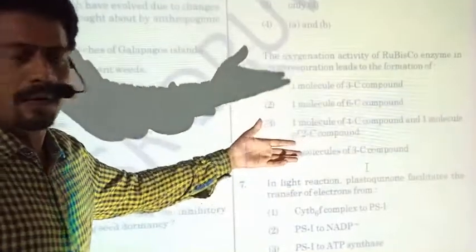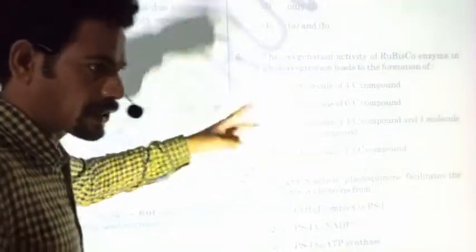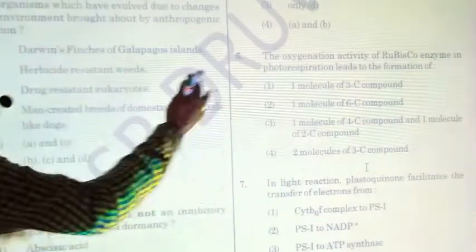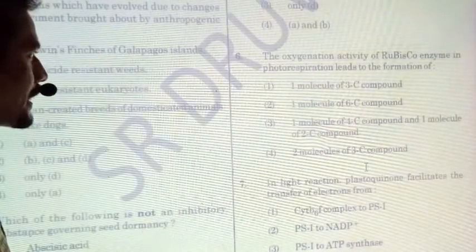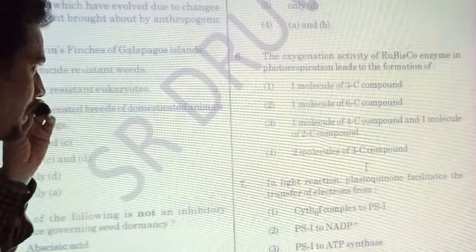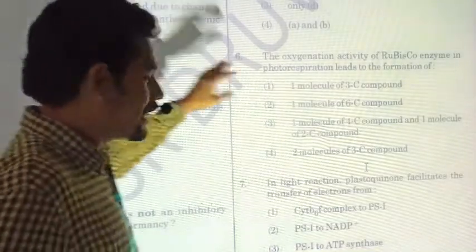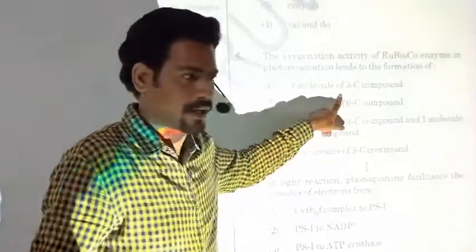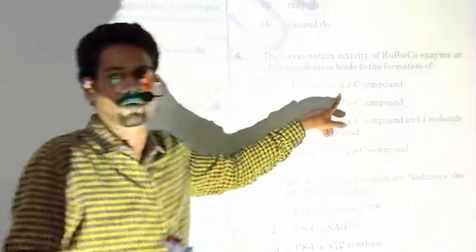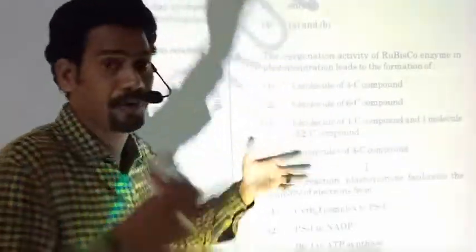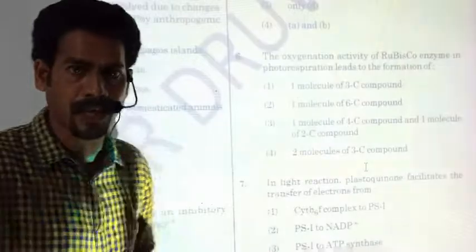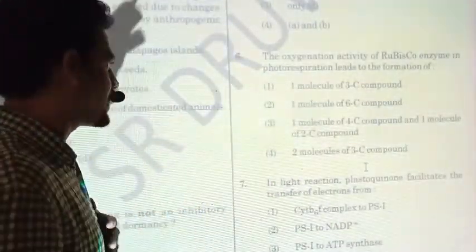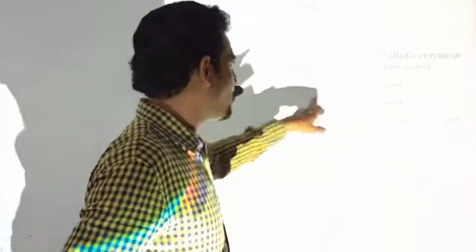RuBisCO can facilitate two processes: carboxylation and oxygenation. It involves in photorespiration where the substrate is RuBP, a five-carbon sugar. Most students may not have full command over photorespiration — it is the C2 cycle, a respiratory photo-respiration process yielding a three-carbon compound.